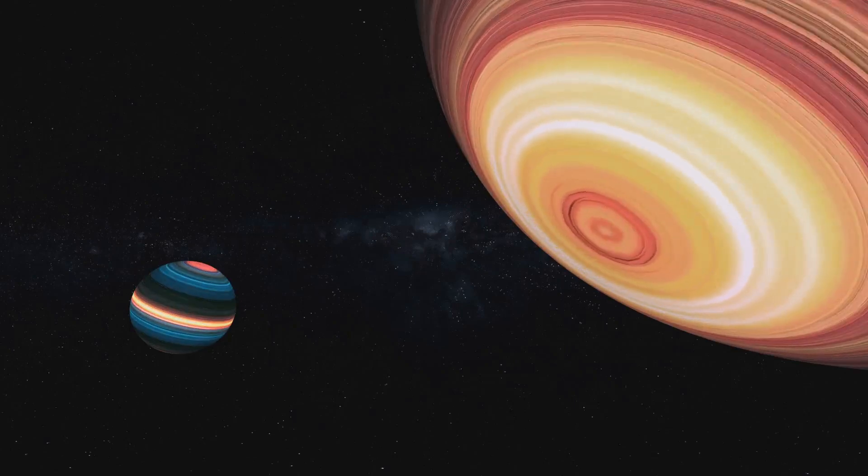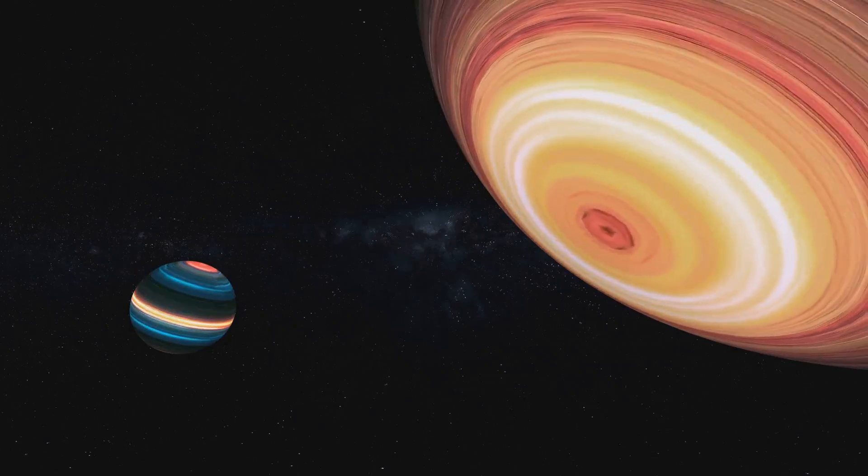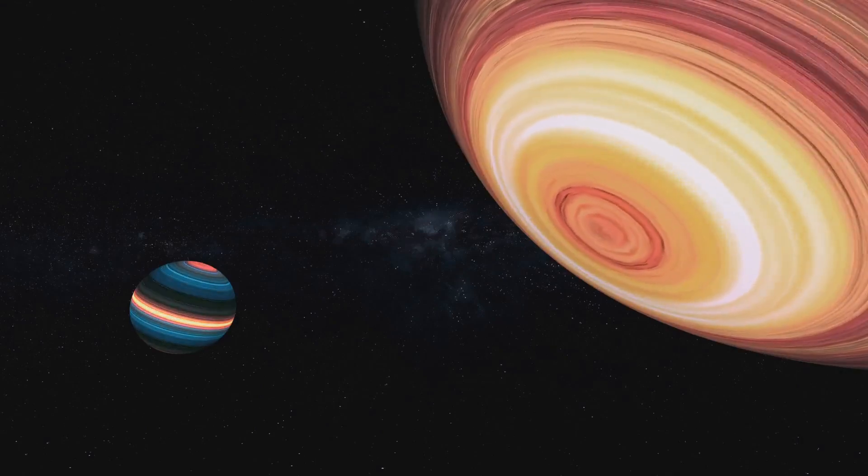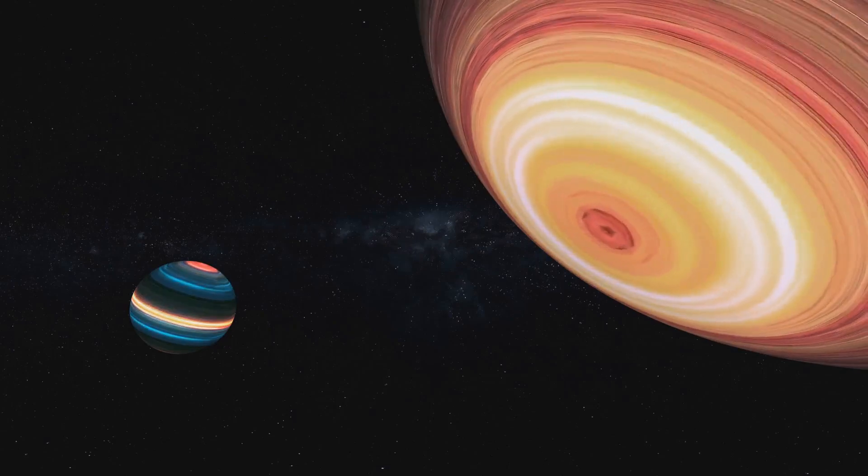The fate of a stellar remnant depends on its mass. If the remnant is less than about three times the mass of the Sun, it becomes a neutron star. However, if it exceeds this critical mass, it will continue to collapse into a black hole.